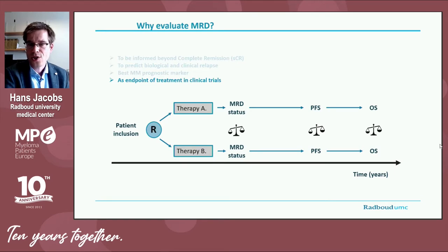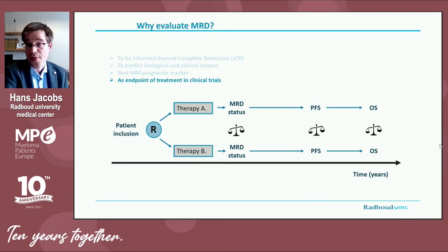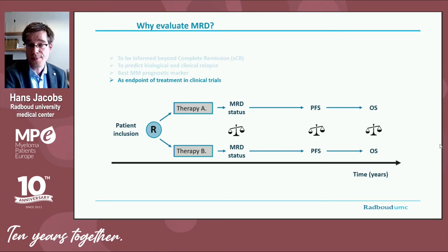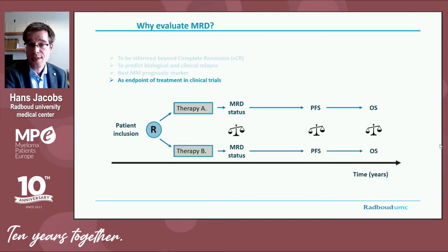Because MRD status so strongly correlates with survival, its importance in clinical studies also increases. In a simplified design of a hypothetical clinical study, myeloma patients are randomized into two groups to study the effectiveness of drug A compared to a new drug B. While measuring overall survival in both groups would be the best proof of effectiveness, the disadvantage is that it takes many years. That is expensive for pharmaceutical companies, and more importantly, for patients and clinicians it seriously delays the implementation of new effective therapies.